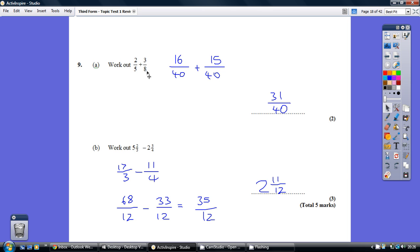So same process as with adding, we need the common denominator which is 12. So, times top and bottom here by 4 and top and bottom here by 3. Take away the numerators, the denominator stays the same.